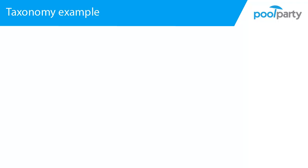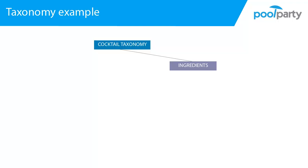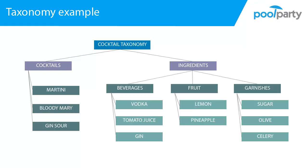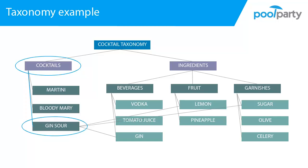Say we are interested in the domain of cocktails. We decide to model our knowledge about cocktails in a taxonomy — we want to model the different ingredients of cocktails and which cocktails they go into. We have our cocktails and we have our ingredients. For ingredients, we distinguish between beverages, garnishes, and fruit. We then also create relationships between ingredients and cocktails. With this very simple structure, we can already infer quite a bit of information — for example, looking at the Gin Sour, we can know that it is a cocktail, and we know that it is related to Gin, Sugar, and Lemon.